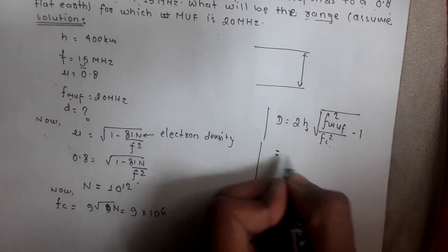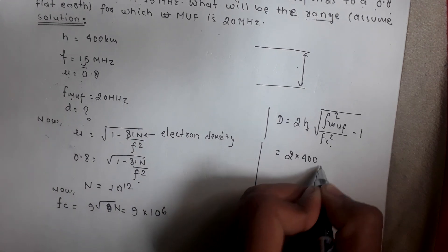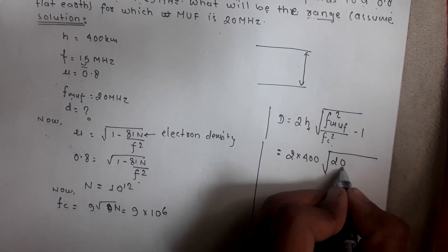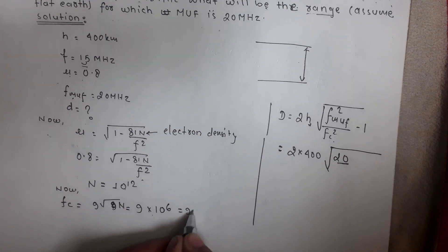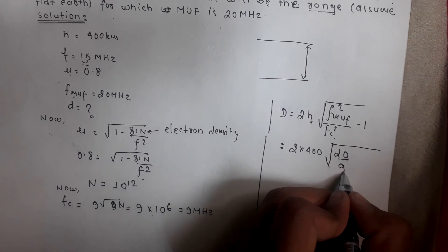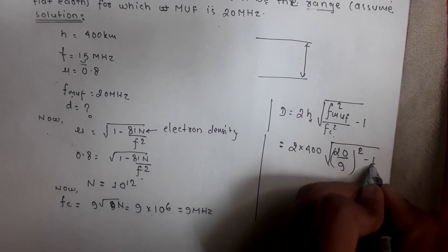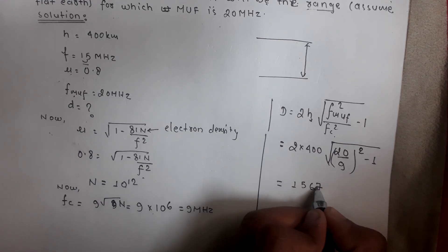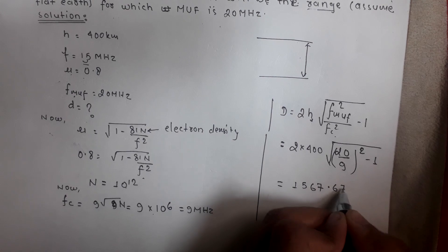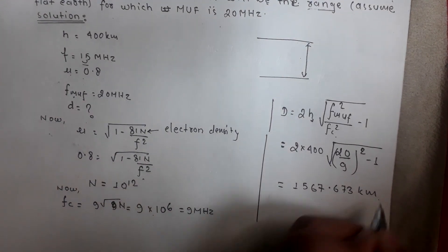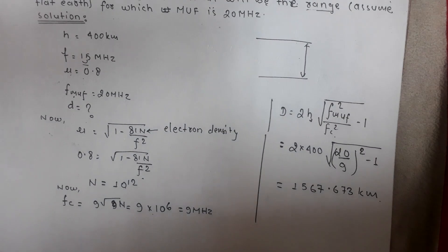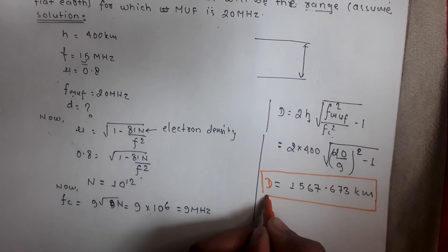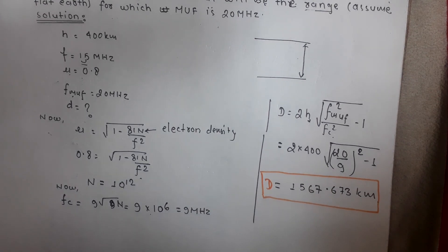Now we have all the parameters to find the skip distance. Substituting: d = 2 × 400 km × sqrt((20/9)² − 1), where h = 400 km, F_MUF = 20 MHz, and FC = 9 MHz. Solving this, we find the skip distance to be approximately 1567.3 kilometers. This is the required skip distance, that is, the range of communication. I hope this helps — if you have any problems, write in the comments below.